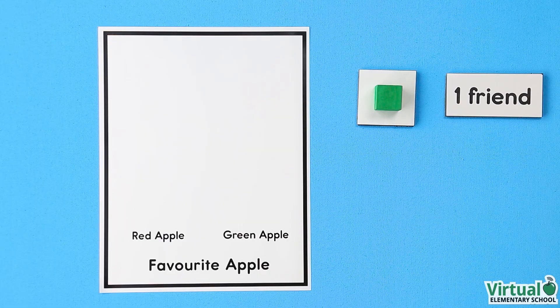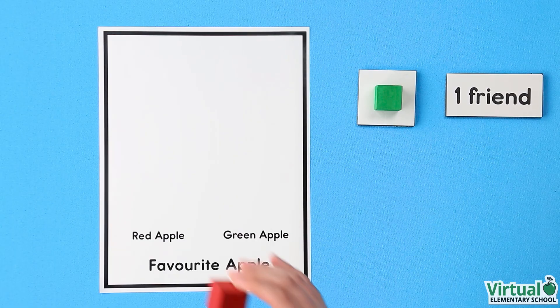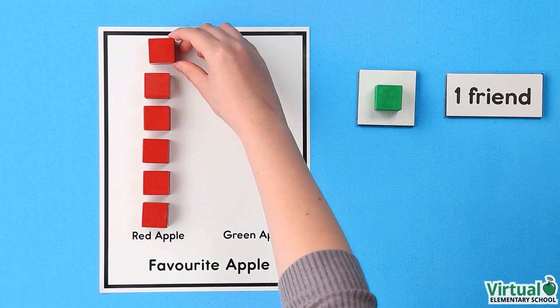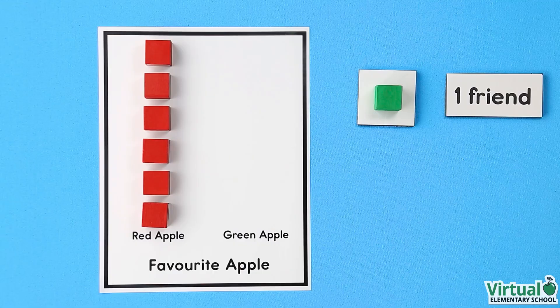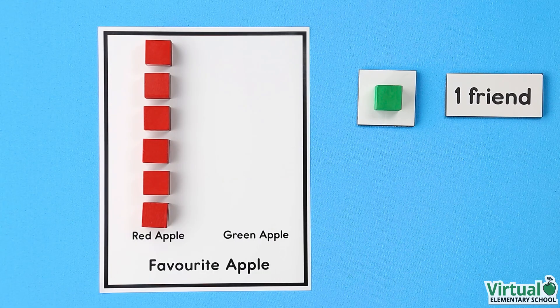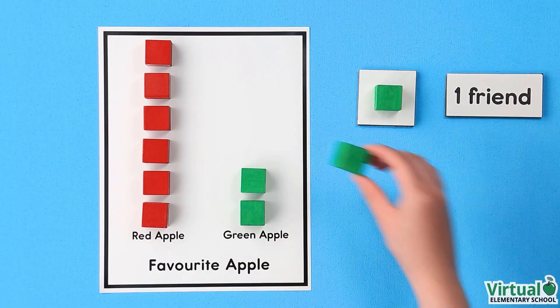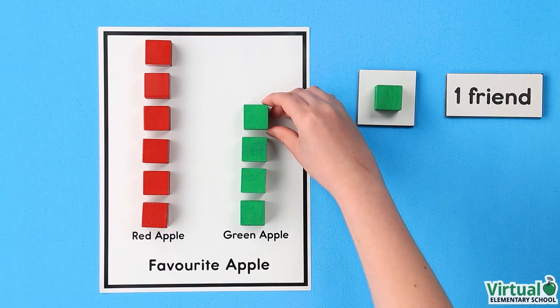6 friends liked red apples. Hanna places 6 red cubes on her graph to show this data. 4 friends liked green apples. Hanna places 4 green cubes on her graph. Hanna has made a concrete graph.